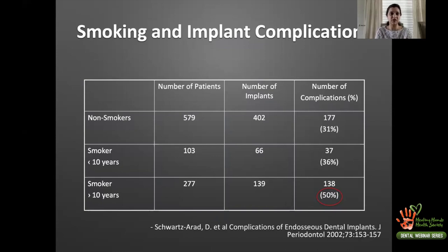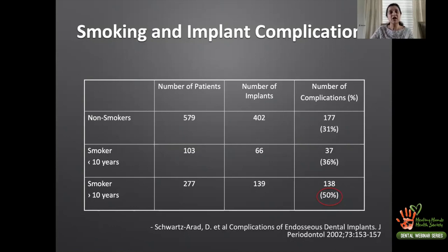In this table, they compared non-smokers with smokers who have been smoking for less than 10 years versus long-term smokers who have been smoking for more than 10 years, looking at the number of complications in percentage. You can very clearly see — I have outlined in a red circle — that smokers who have been smoking for more than 10 years have a very high complication rate, almost close to 50 percent of complications.